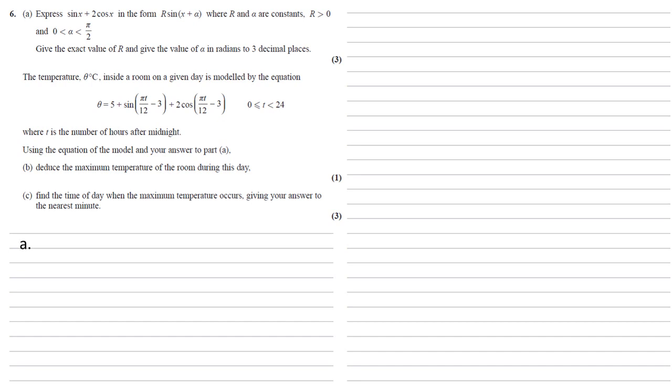When we're changing a multiple of sin plus a multiple of cos into the form r sin(x plus alpha), we've got some results that we just have to memorize and use. To find r, we do the square root of the sum of the squares of the coefficients of sin and cos. In this case, the coefficient of sin is 1, the coefficient of cos is 2, so r equals the square root of 1 squared plus 2 squared, which is root 5.